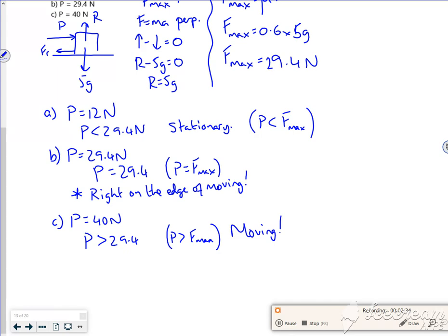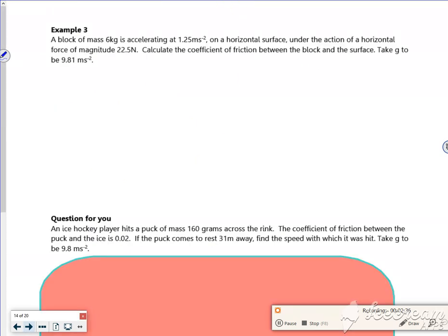It kind of makes some sense. So then there's an example here. It says a block of mass 6 kilos is accelerating at 1.25 on a horizontal. That's not very horizontal. That's not overly better, but never mind.